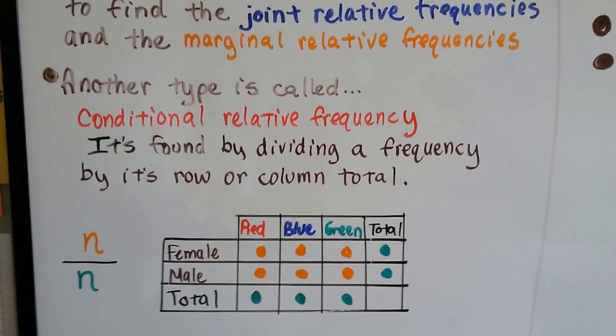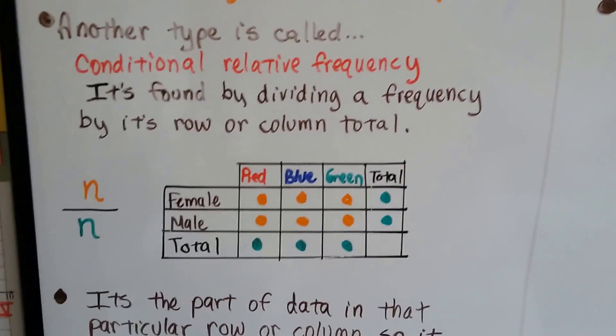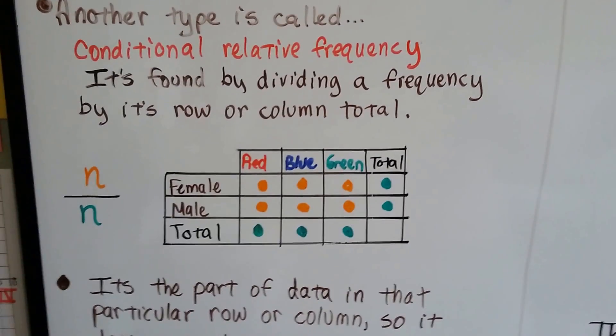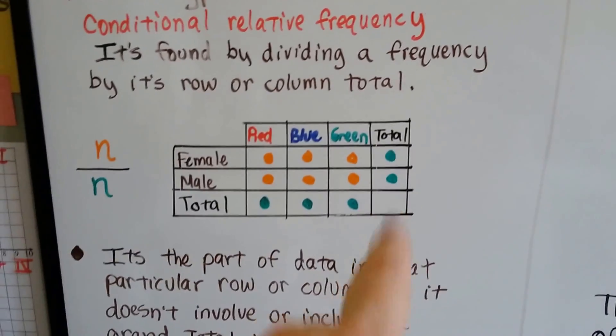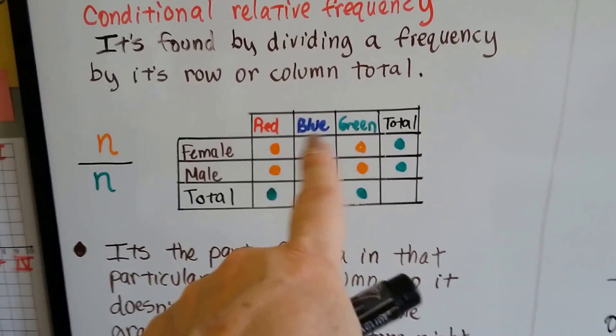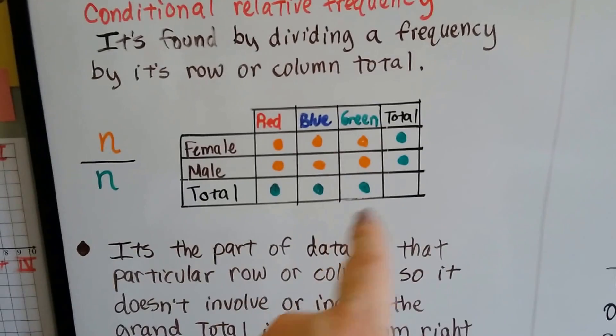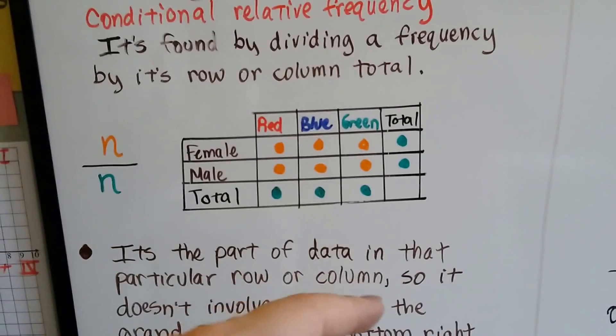Well, there's another type called a conditional relative frequency. And it's found by dividing a frequency by its row or column total, not the grand total. So it'd be any one of these orange ones divided by any of the green ones for that row or column.